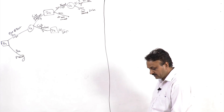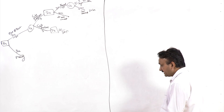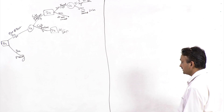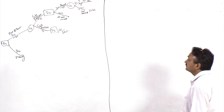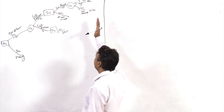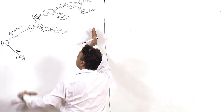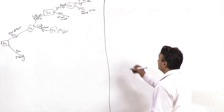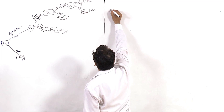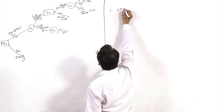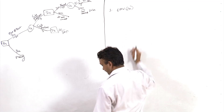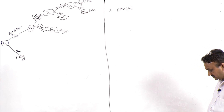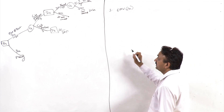Let us solve this question. We have to decide whether we should go for this project or not. As I said, you start from the right-hand side and move towards the left-hand side. The first thing is to calculate the expected monetary value — the EMV at point C2.